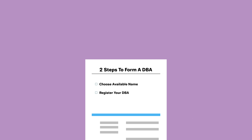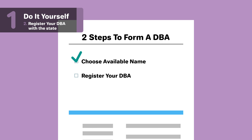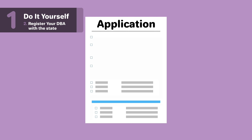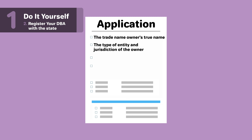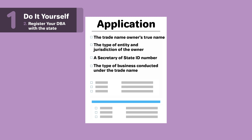Step 2: Register your DBA. After you've chosen an available name, you'll want to register your DBA. For all business structures in Colorado, you must register your DBA with the Secretary of State online. The information you will need to provide varies slightly depending on whether your current business is a sole proprietorship, partnership, LLC, or corporation, but it may include the following: the trade name owner's true name, the type of entity and jurisdiction of the owner if an LLC, corporation, or partnership, a Secretary of State ID number if an LLC or corporation, and the type of business conducted under the trade name.